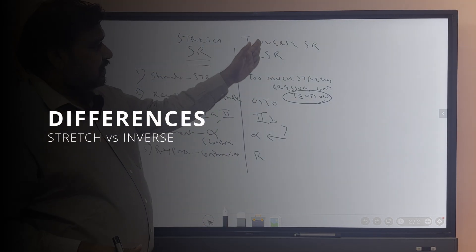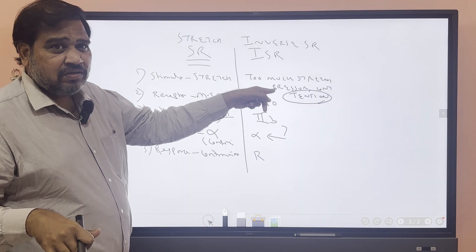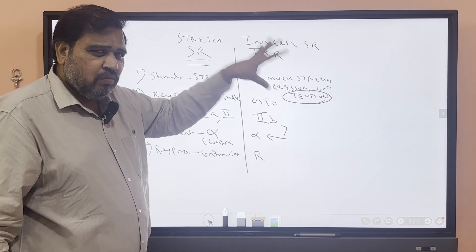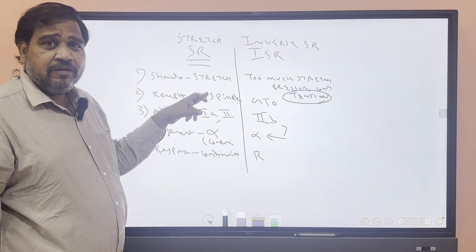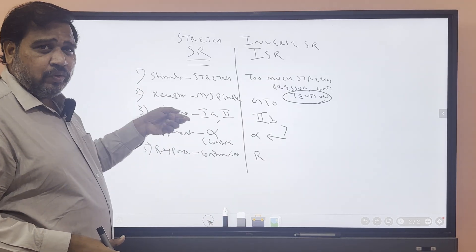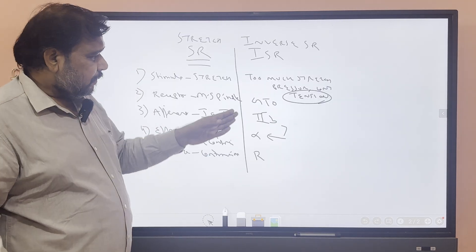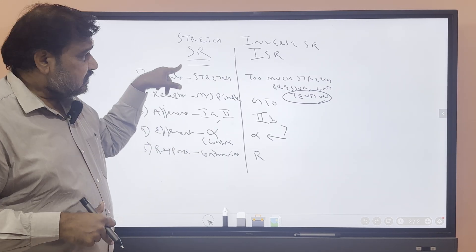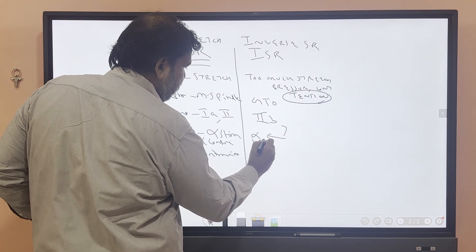Differences between stretch reflex and inverse stretch reflex: The stimulus for stretch reflex is stretch of the muscle, whereas for inverse stretch reflex it is tension — too much pressure or contraction. Receptors: muscle spindle for stretch reflex, Golgi tendon organ for inverse stretch reflex. Afferent: 1A or 2 for stretch reflex; 1B for inverse stretch reflex. In stretch reflex, alpha is stimulated; in inverse stretch reflex, alpha is inhibited.